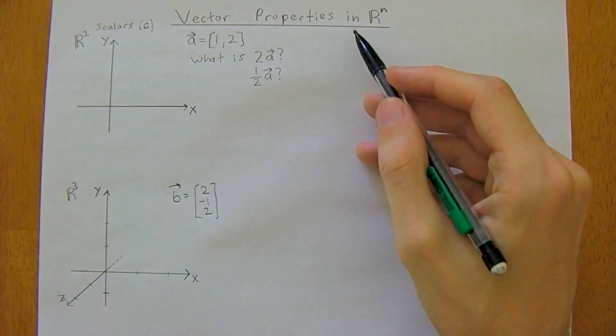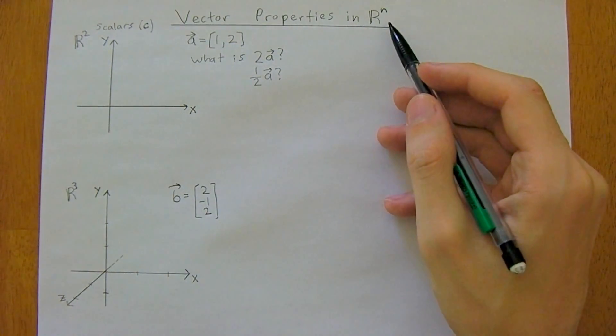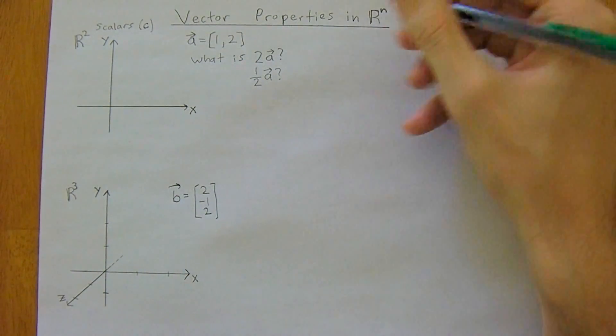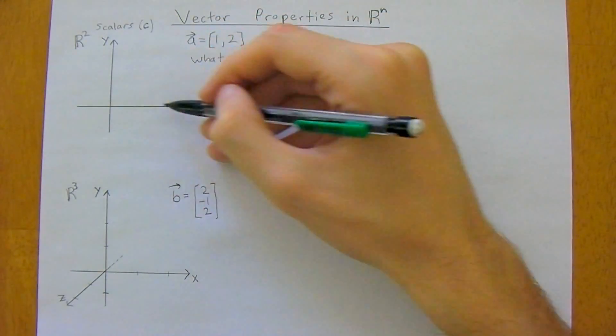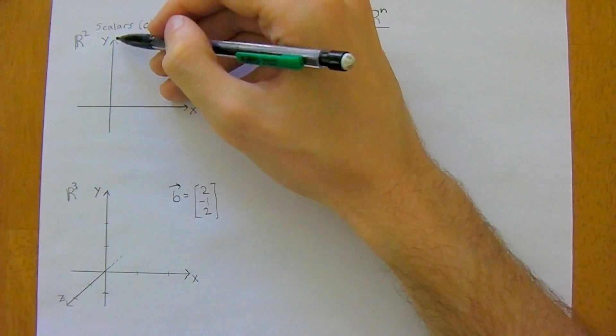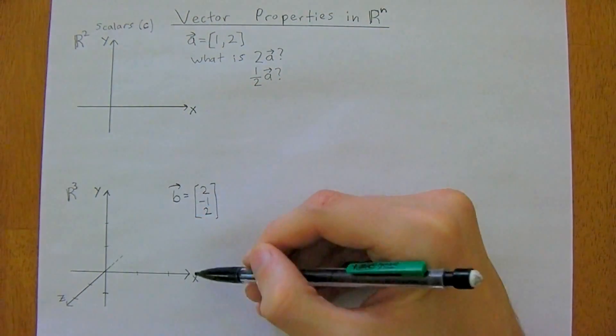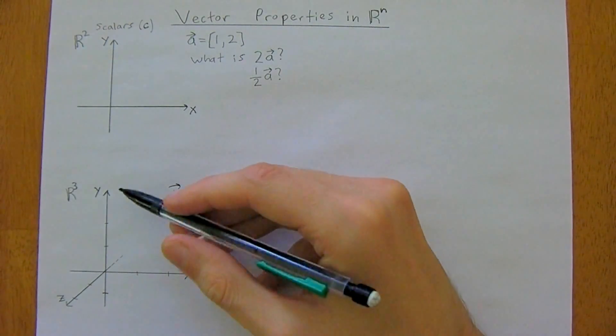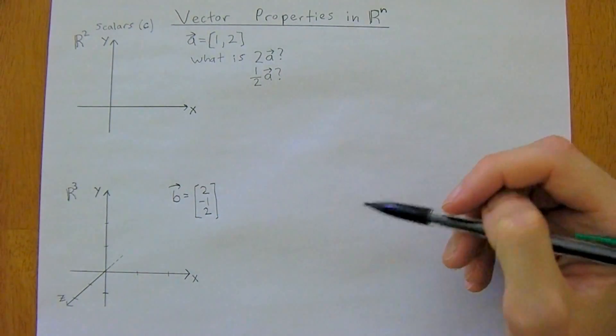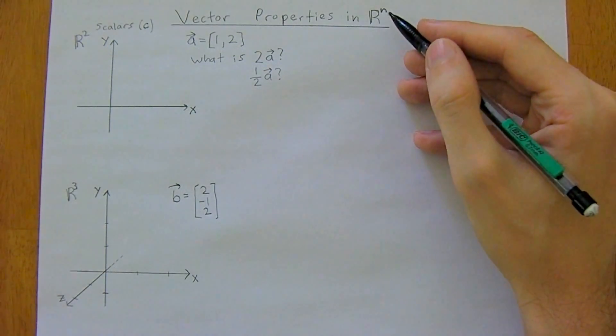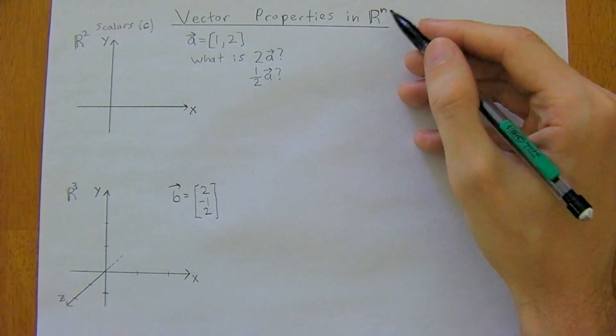We're going to get into some vector properties now in R to the n, and recall that this n here, so R to the 2 just means we've got an x-axis and a y-axis, and R to the 3 just means we're working in three dimensions with an x, a y, and now a z-axis as well, and really you can have R to the anything, so R to the 4, R to the 5, R to the 6.